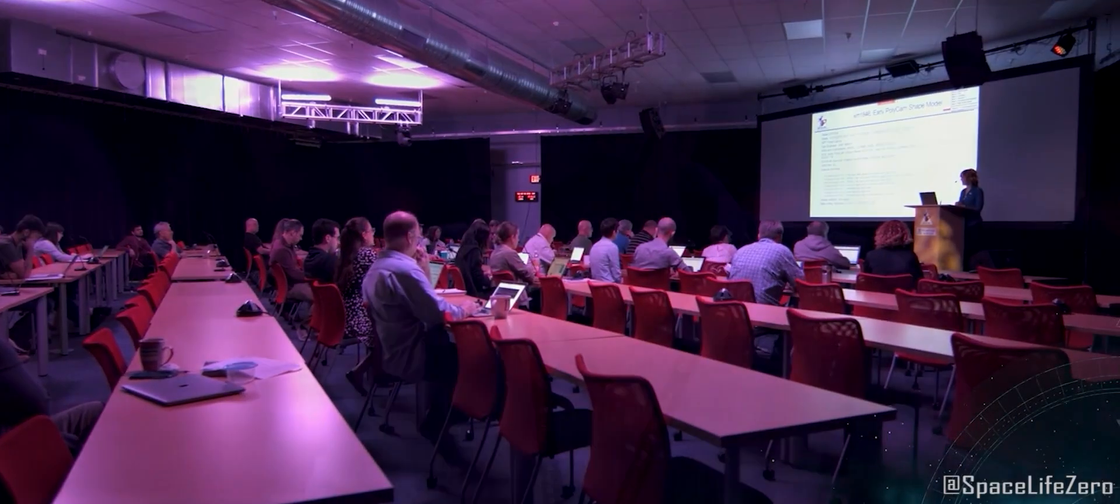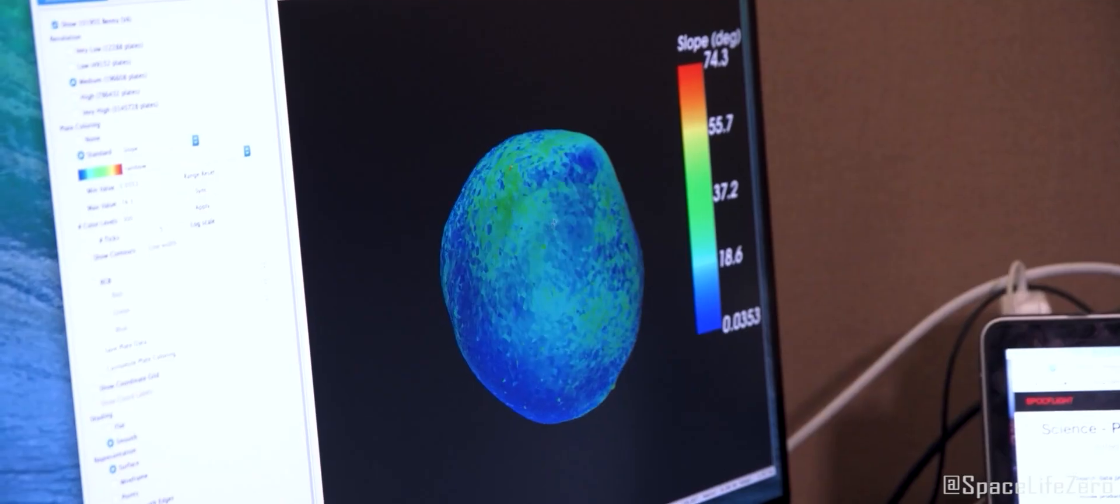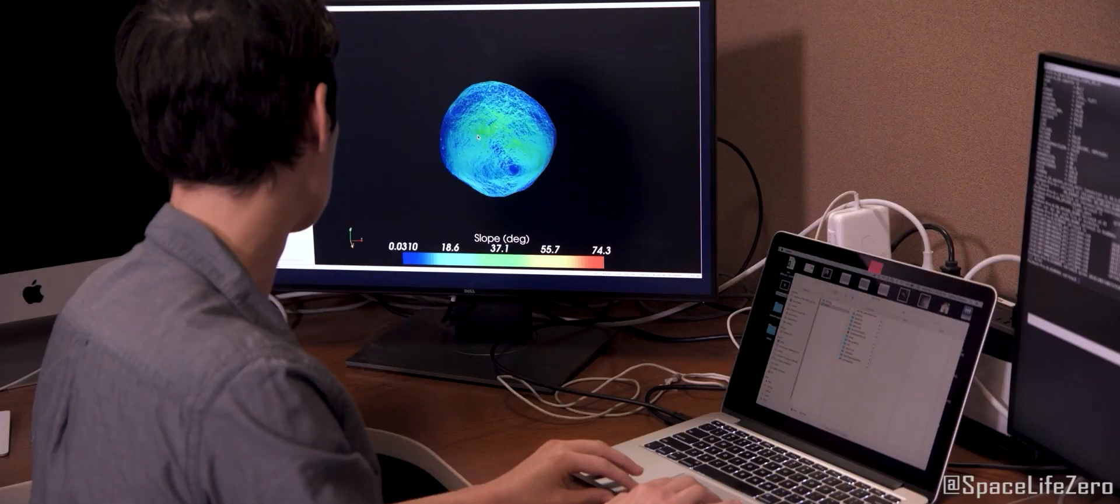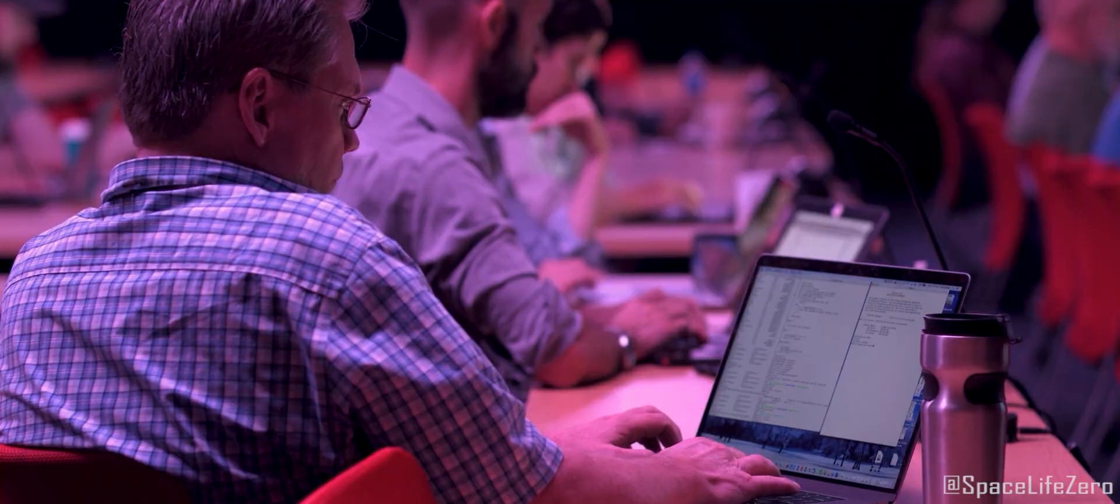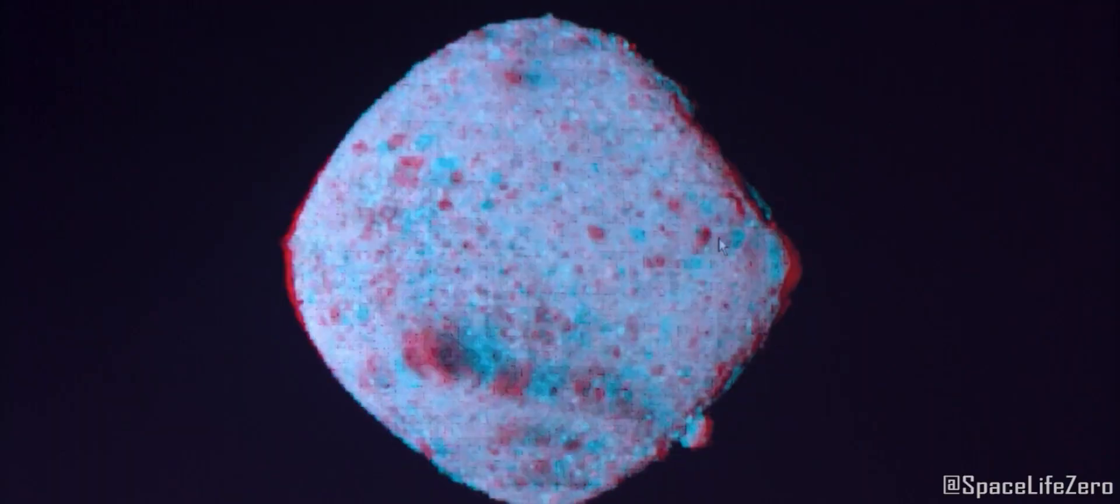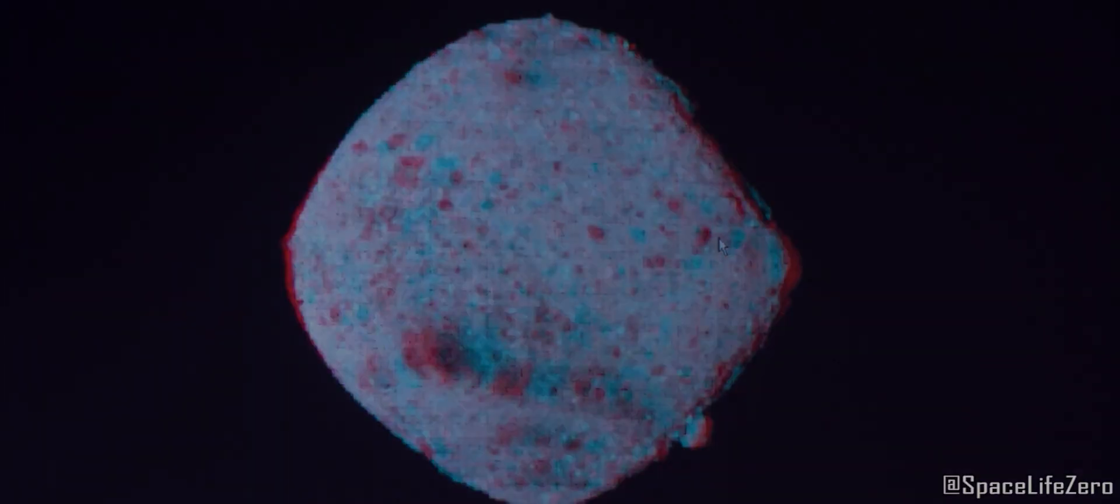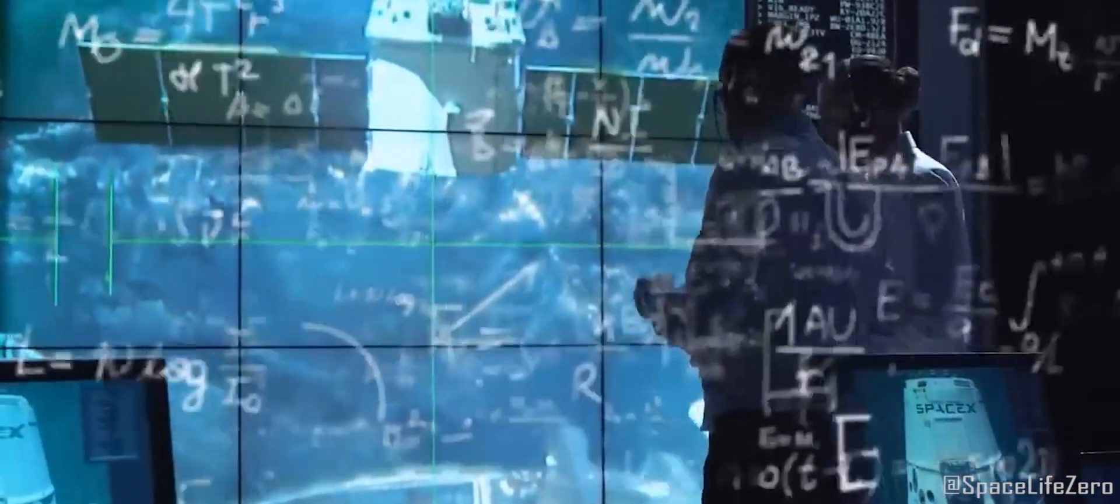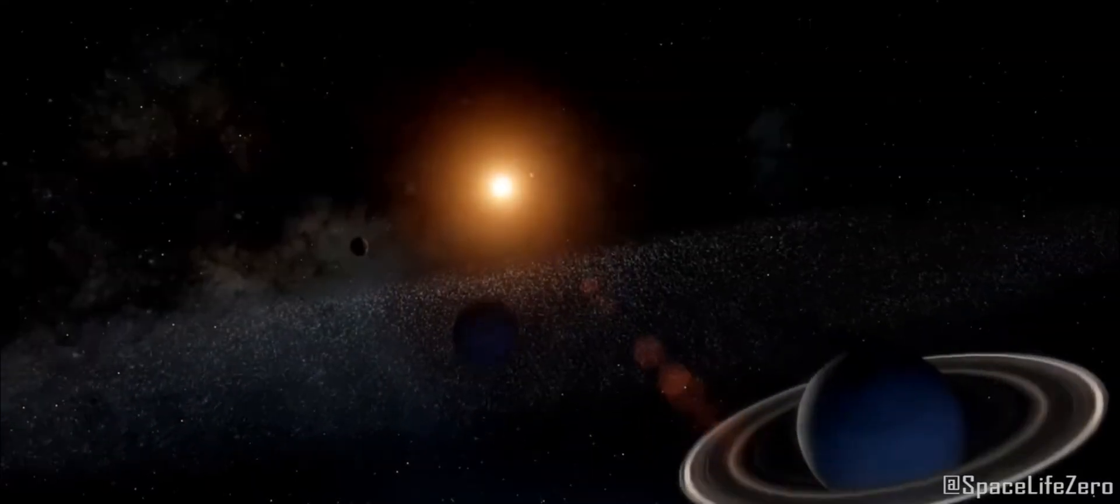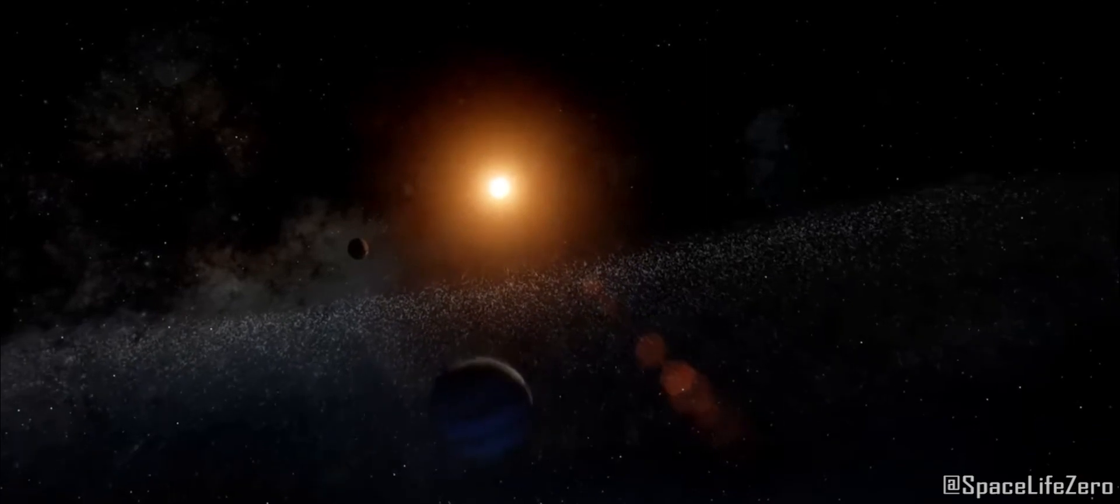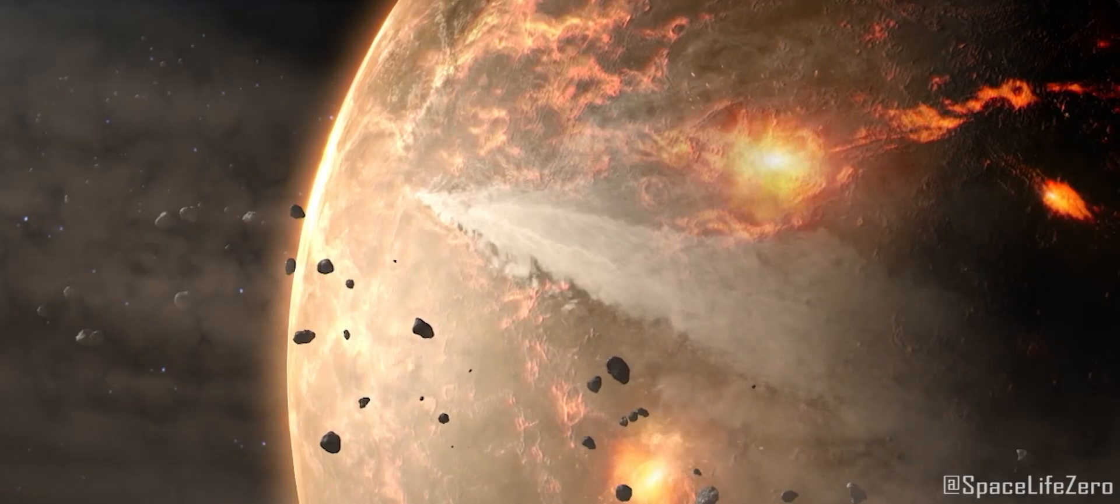NASA and other space agencies around the world closely monitor any objects approaching close to our planet. It provides a fantastic opportunity for scientists to learn more about the composition, structure, and behavior of asteroids, and it also helps us better understand the origins of our solar system and how these cosmic travelers might have influenced Earth's history.